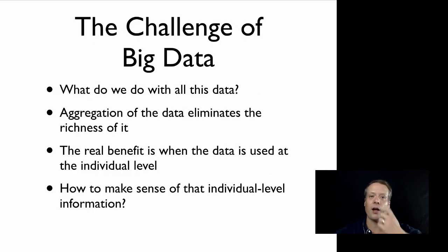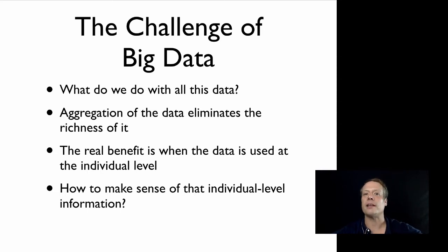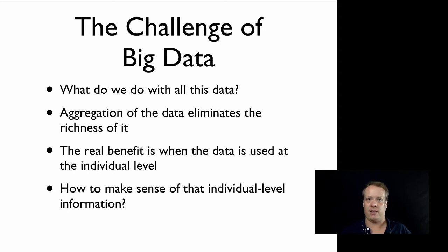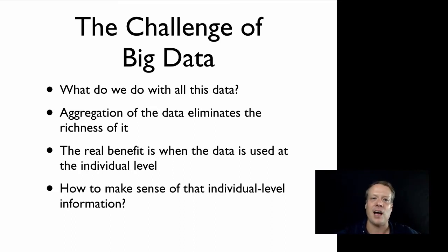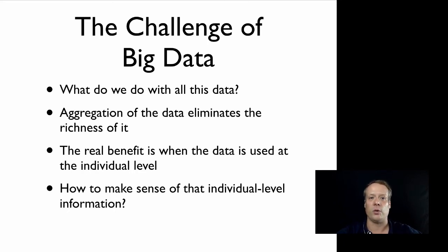The challenge with all that big data is that there's a lot of it. If you just look at means and variances, you're automatically throwing away a huge chunk of what's important and interesting — the heterogeneity of the data, the individual-level differences. But you can't sit around and look at 10 million tweets every day. So you have to figure out a compromise: how do we not aggregate across meaningful differences, but still represent individual-level behavior without spending so much effort that we can't do it in a single day?